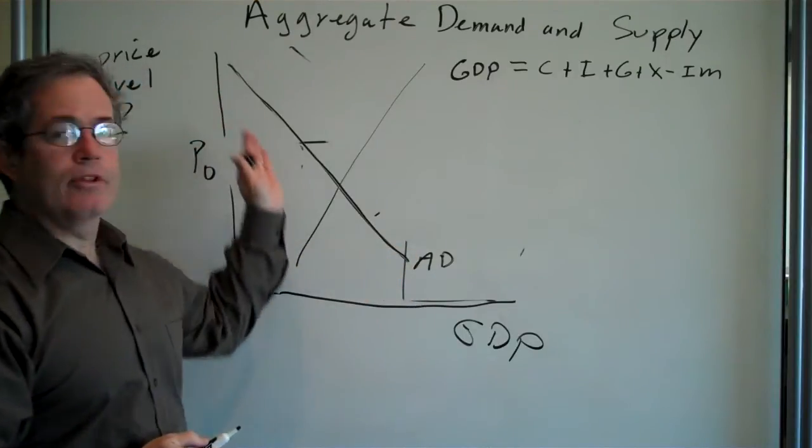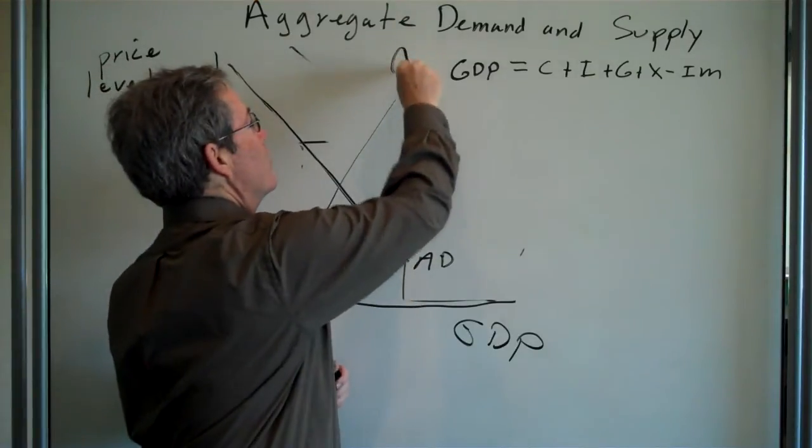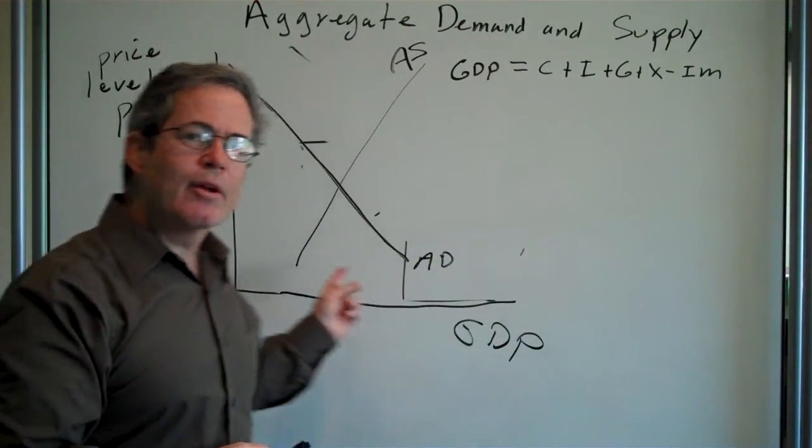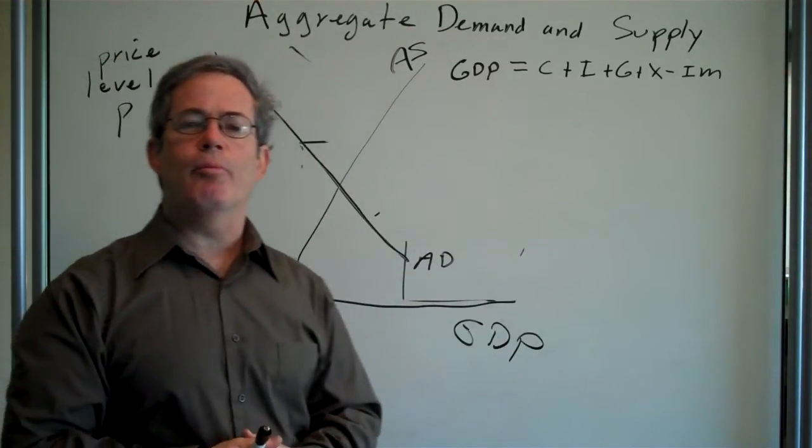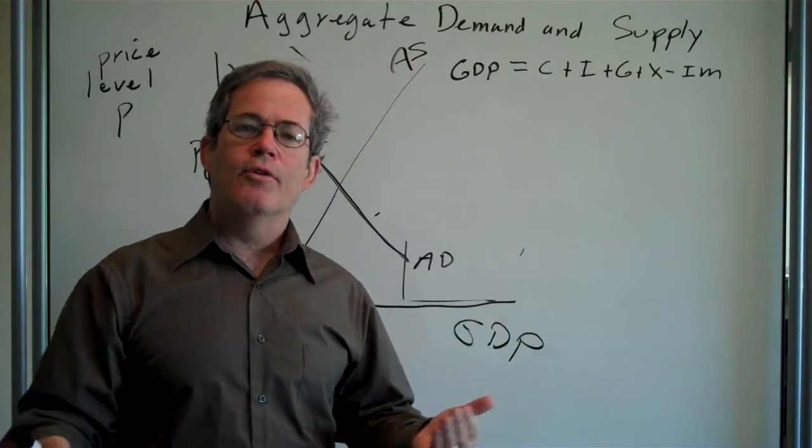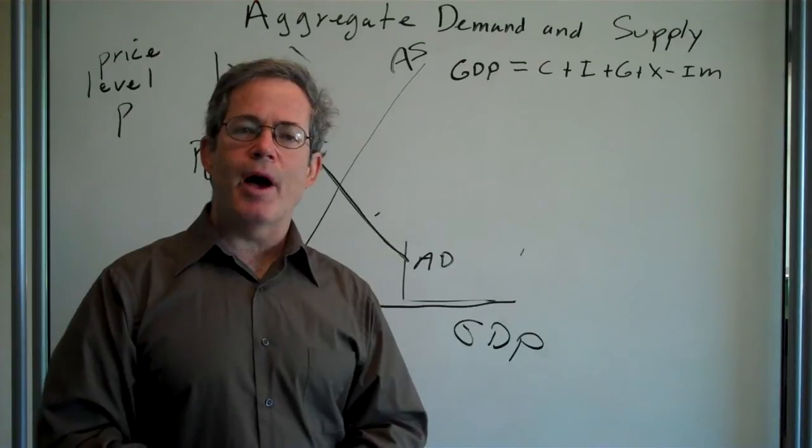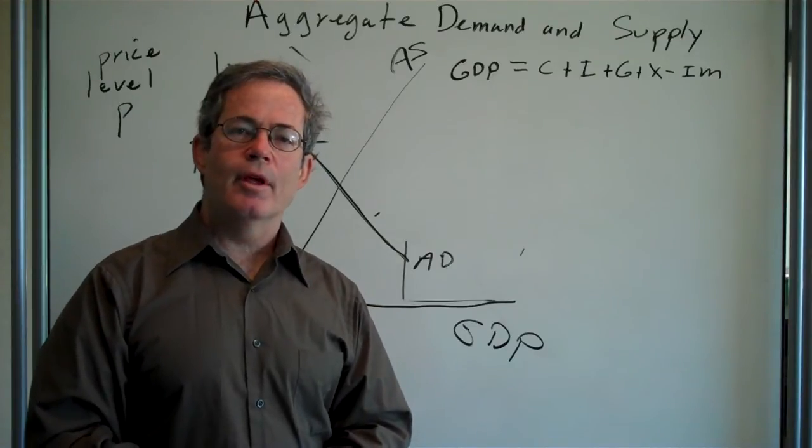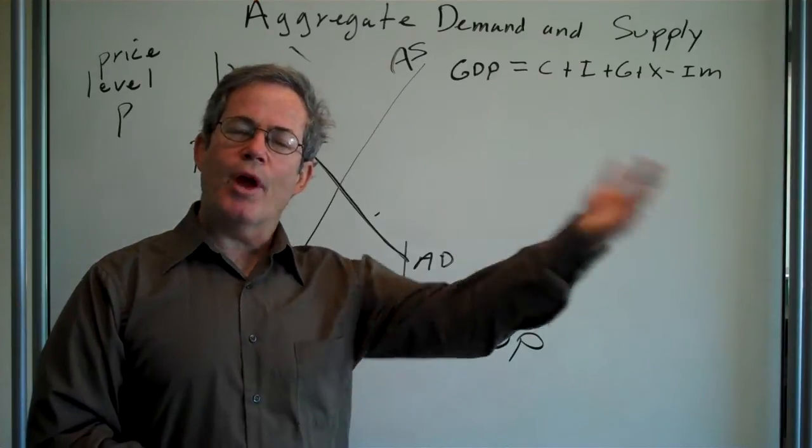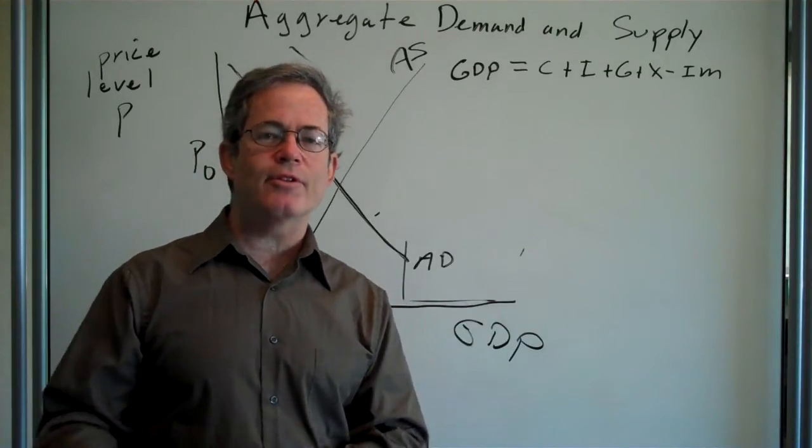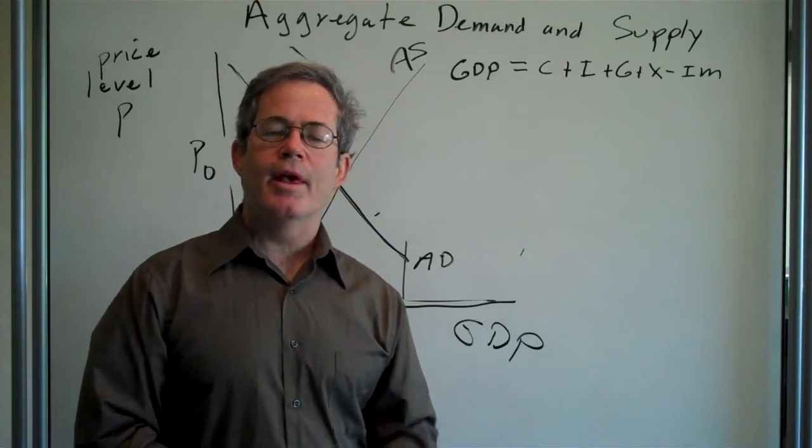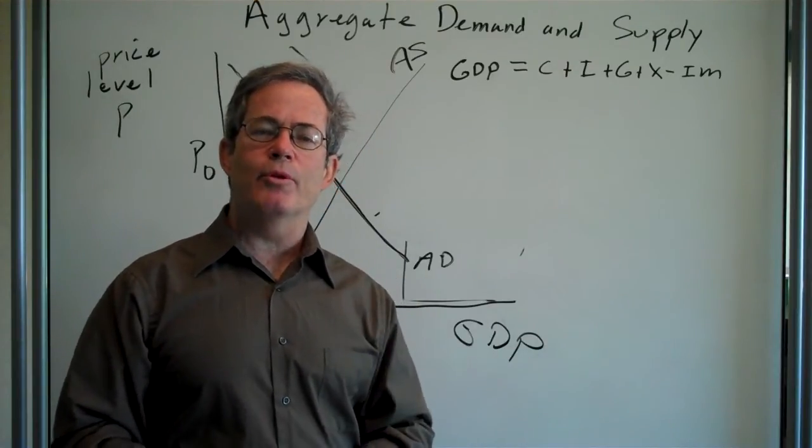Aggregate demand slopes downward. Aggregate supply slopes upward. Now, why does the aggregate supply curve slope upward? It slopes upward because when prices go up, firms can make more profit by producing more output as long as their costs don't go up quite as fast. So if the price of the product they sell goes up faster than the cost of what it takes to produce these goods goes up, then they can make more profit by producing more.